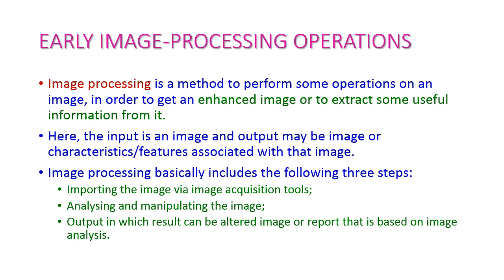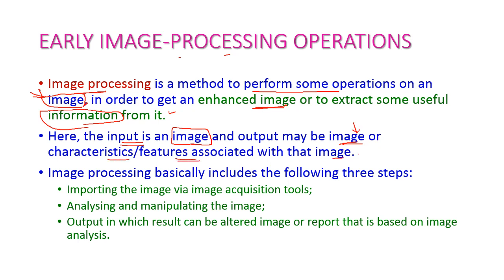Image processing means a method to perform some operations on images. The image may be either an analog image or a digital image. Image processing will be applied to enhance the image or extract some useful information from the image. The input is the image, and the output may be an enhanced image or the characteristics or features of that image.